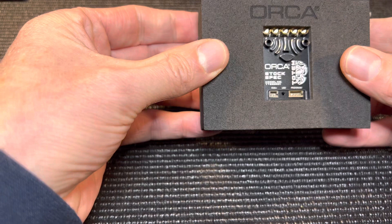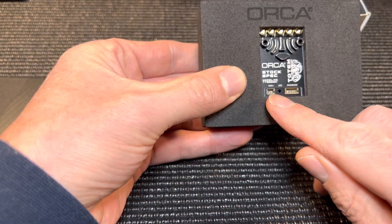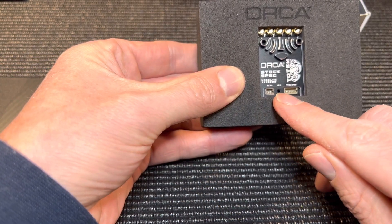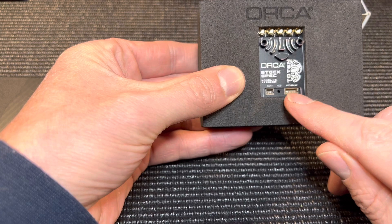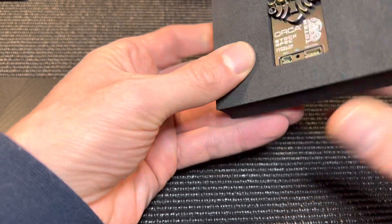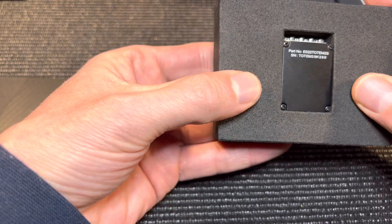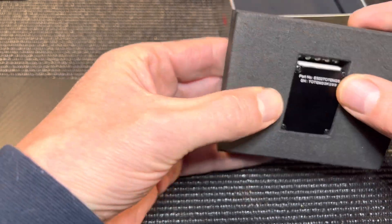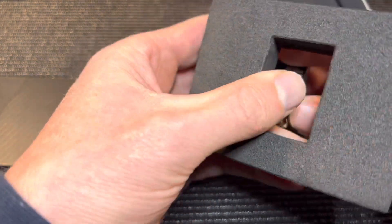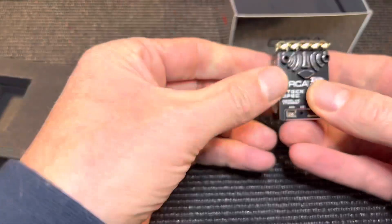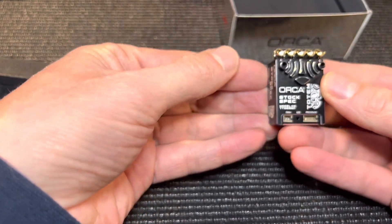So that's the ESC. It's got a port for a fan, an LED light, it has a programming port there so you can use the regular Orca program card. Push that out of there. It's very small, I'll measure it in a second.